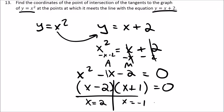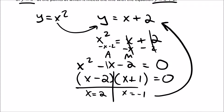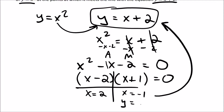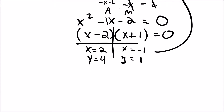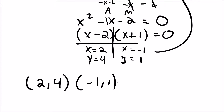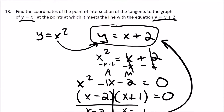Solving that gives us x equals 2 and x equals negative 1. To get the y-values, I put them back into the linear equation. For x equals negative 1: negative 1 plus 2 equals 1. For x equals 2: 2 plus 2 equals 4. So we have two points: (2, 4) and (-1, 1).